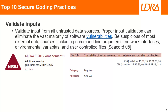Interestingly, if we take a look at the MISRA-C, they actually added an additional number of security guidelines for MISRA-C 2012. One of those guidelines was Directive 4.14, which says the validity of values received from external sources should or shall be checked. The C language has a lot of undefined behaviour, and it's this undefined behaviour that is the cause of software vulnerabilities.